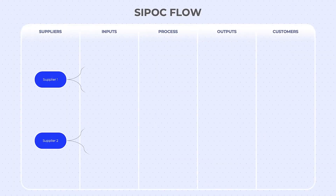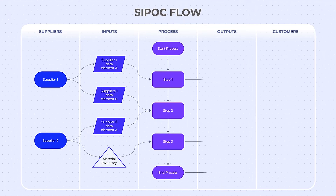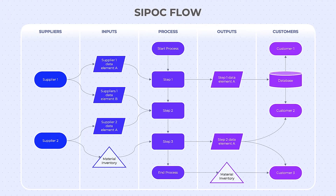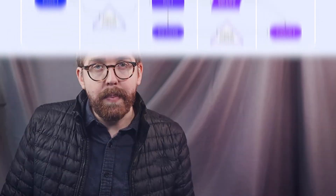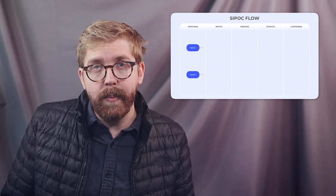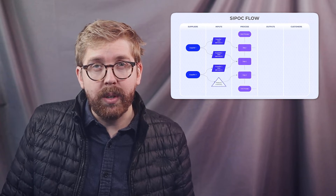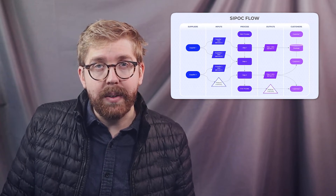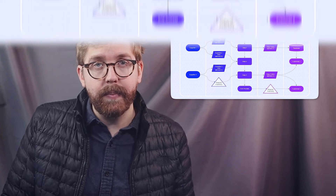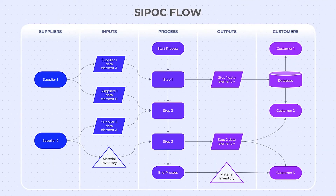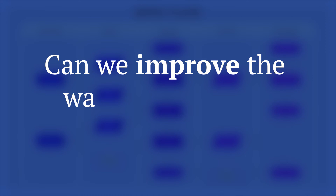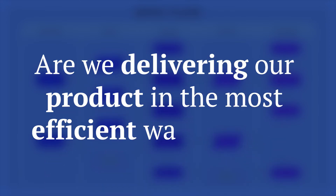The SIPOC flowchart is a great way to show a high-level view of your processes when many internal and external stakeholders are involved. SIPOC stands for Suppliers, Inputs, Processes, Outputs, and Customers. SIPOC is often used for process improvement. By mapping out all the important components, it helps identify bottlenecks and where certain steps can be eliminated. A SIPOC diagram can help answer questions like, can we improve the way we manage our suppliers, or are we delivering our product in the most efficient way possible?